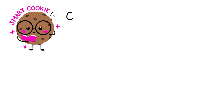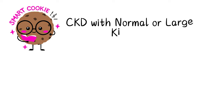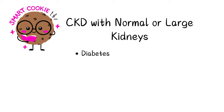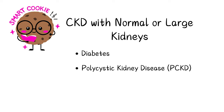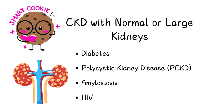Another important point: although CKD usually causes shrunken kidneys, there are special conditions where kidney size remains normal or even bigger. These conditions are diabetes, polycystic kidney disease, amyloidosis, and HIV. If something deposits on the kidney like amyloid, it's going to look bigger. In polycystic kidney disease, there's development of cysts, so these patients will have palpable, enlarged kidneys.